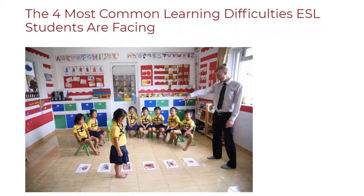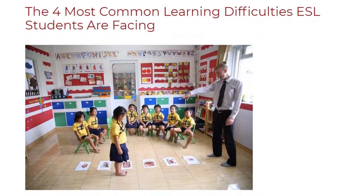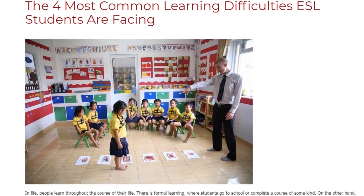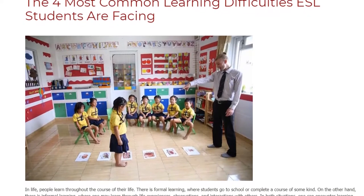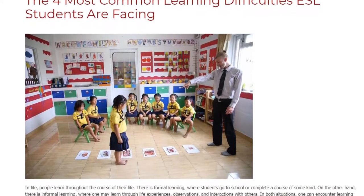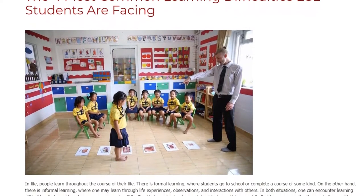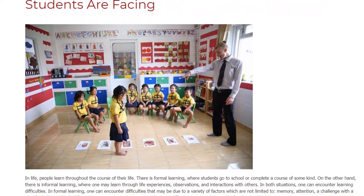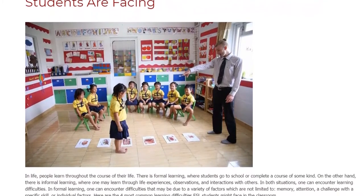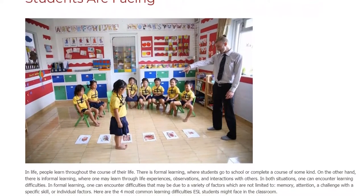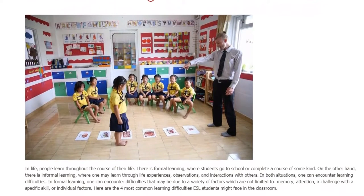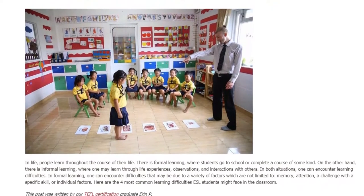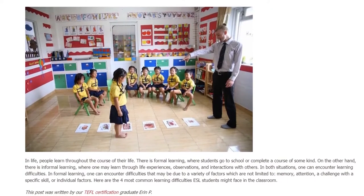In life, people learn throughout the course of their life. There is formal learning, where students go to school or complete a course of some kind. On the other hand, there is informal learning, where one may learn through life experiences, observations, and interactions with others. In both situations, one can encounter learning difficulties.